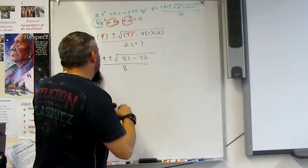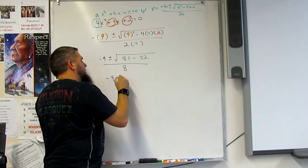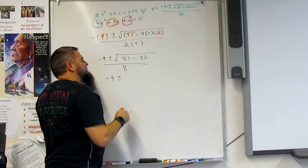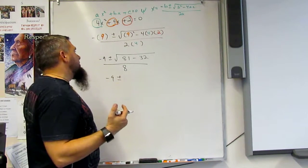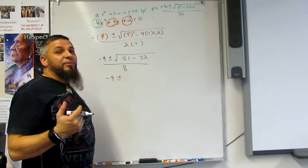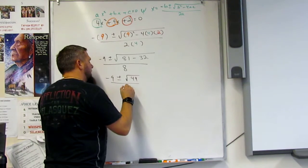And so now I've got negative 9 plus or minus, 81 minus 32. So 32 from 81 is 79, minus 3 from 7 is 4. So that would be the square root of 49, right? All over 8.